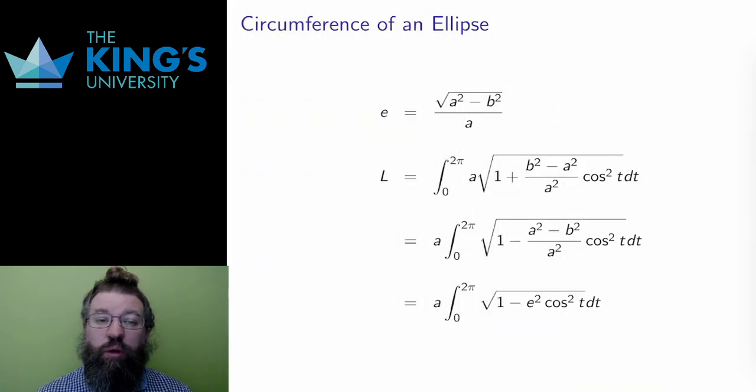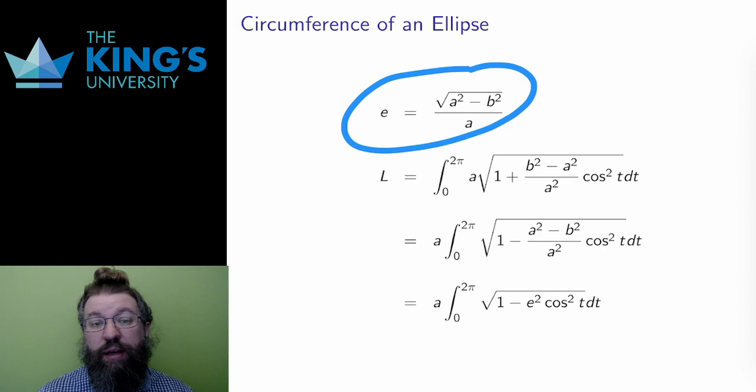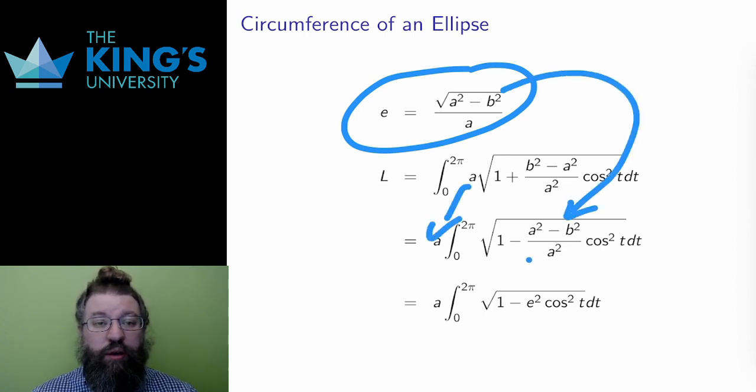Now recall the eccentricity I defined. I can pull a out of the entire integral and replace this expression with e squared, the eccentricity squared. And the result is this integral.